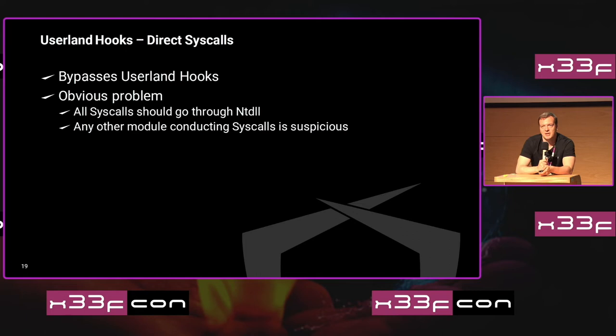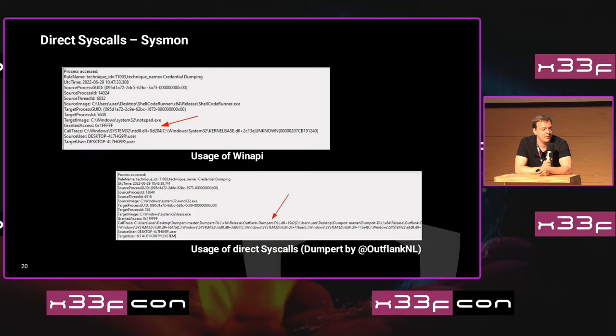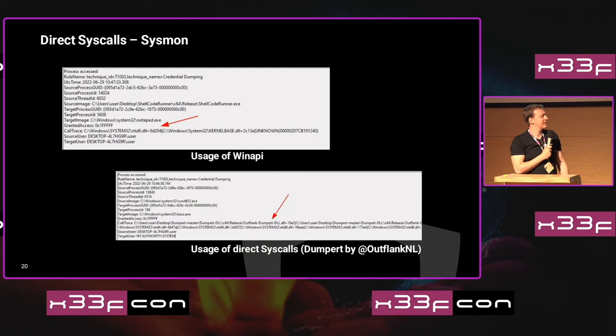However, while direct syscalls do bypass userland hooks, there are obvious problems. All system calls should go through ntdll — if any other module than ntdll is doing a system call, that's quite suspicious. Looking at Sysmon, in the normal case the last module in the call trace is ntdll. But if we make use of direct system calls — here I use the tool by Outflank — we see that the last module in the call trace is not ntdll but outflank_dump.dll, which is a big indicator of compromise.